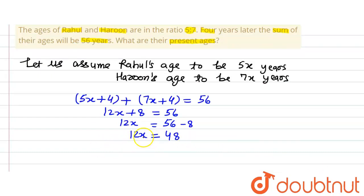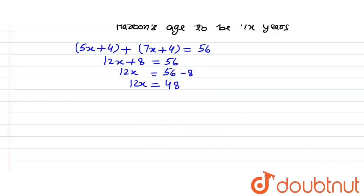So now 12 is getting multiplied here. When it will go to the right hand side of the equation it will get divided, so it will divide 48. So 48 by 12 which is equal to, x equals 4. So we get x equals 4.